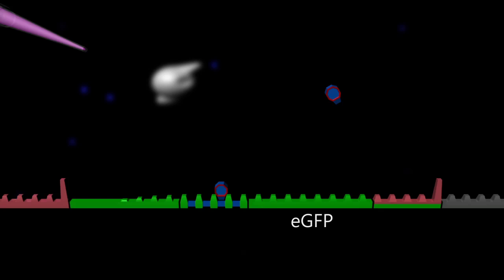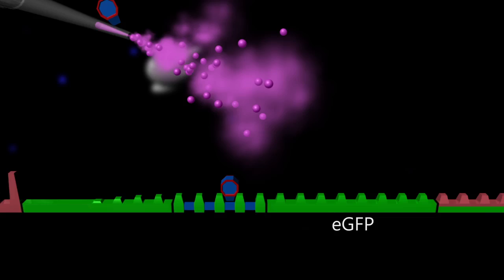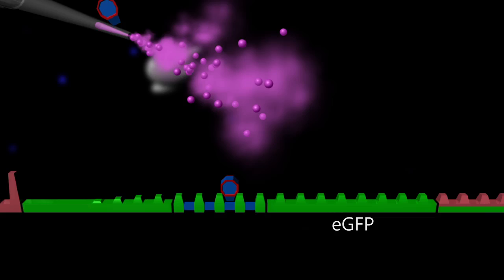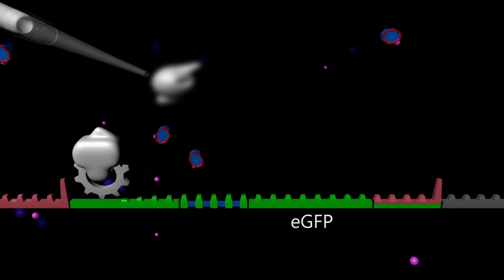To enable a switch-like functionality, the small molecule IPTG can be applied to the system. IPTG induces a conformational change in the LACI repressor protein, rendering it incapable of binding to the target site upstream of the EGFP gene.